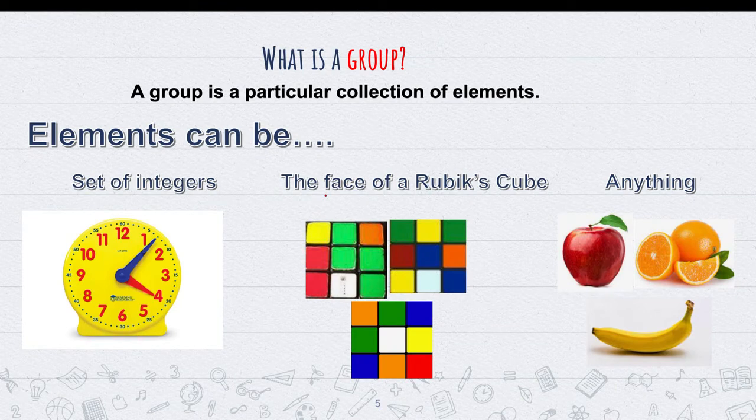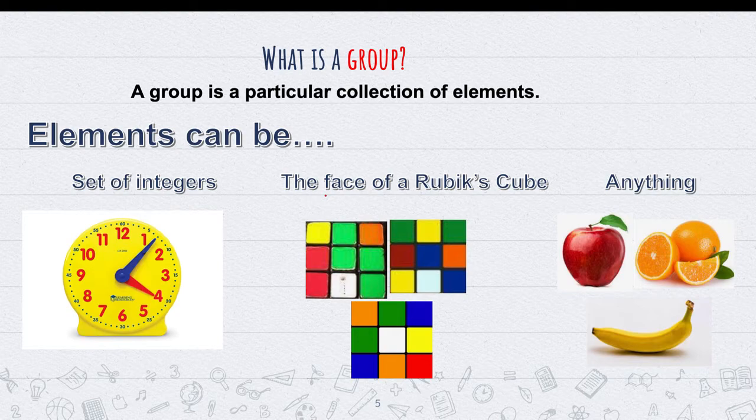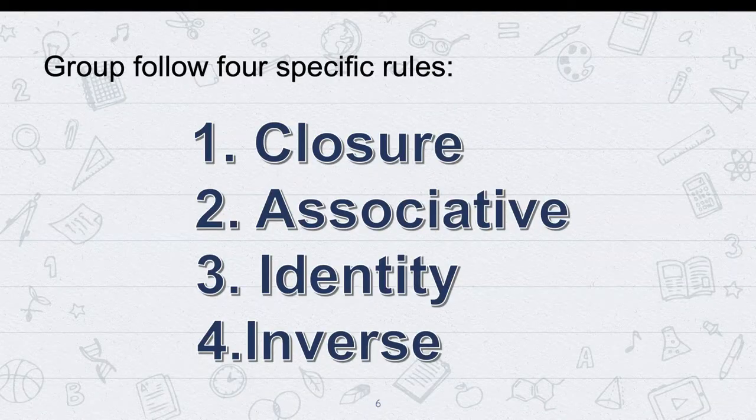In math, a group has a particular collection of elements. Elements can be a set of integers, the faces of a Rubik's cube, or anything. A group has four properties.